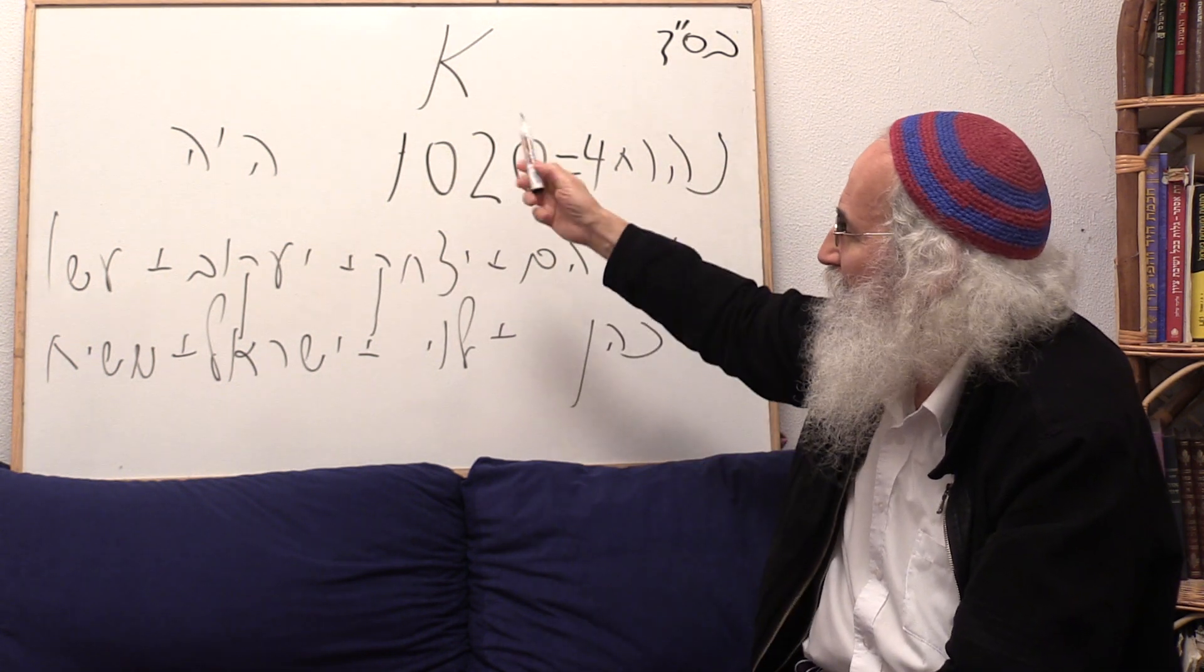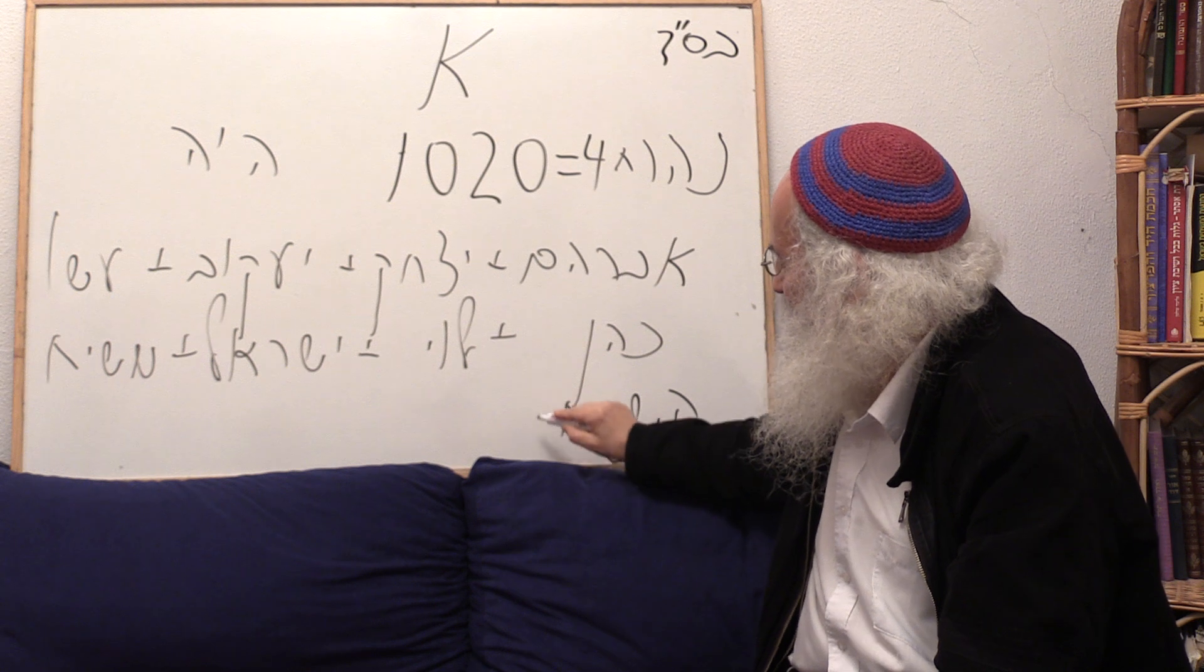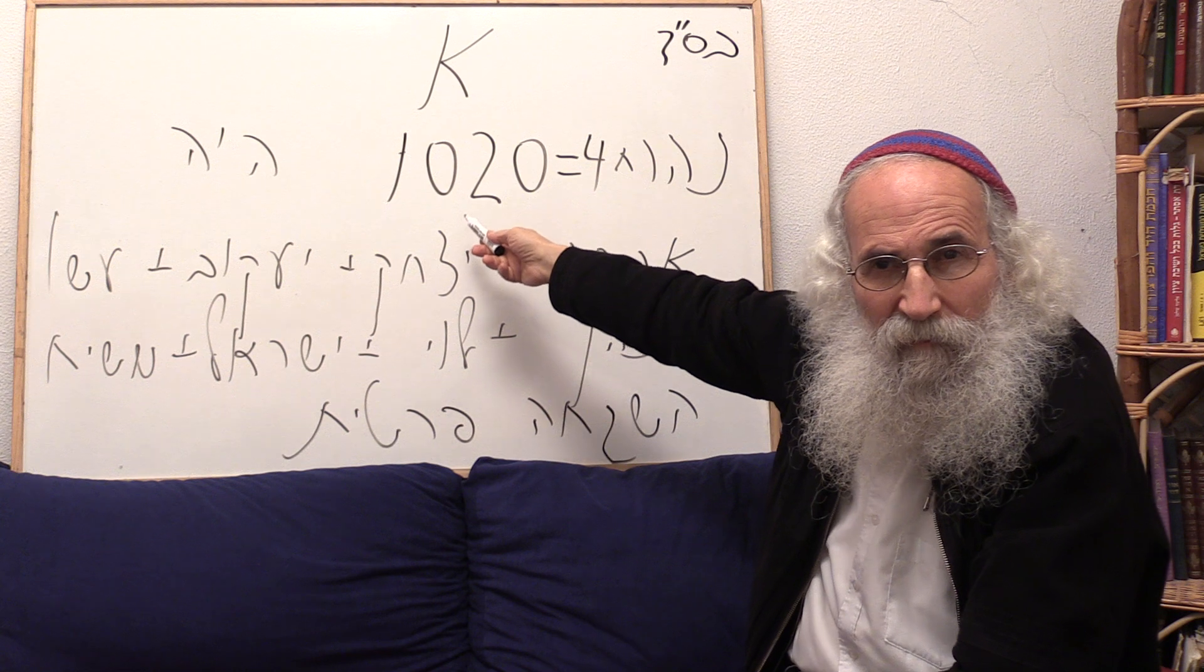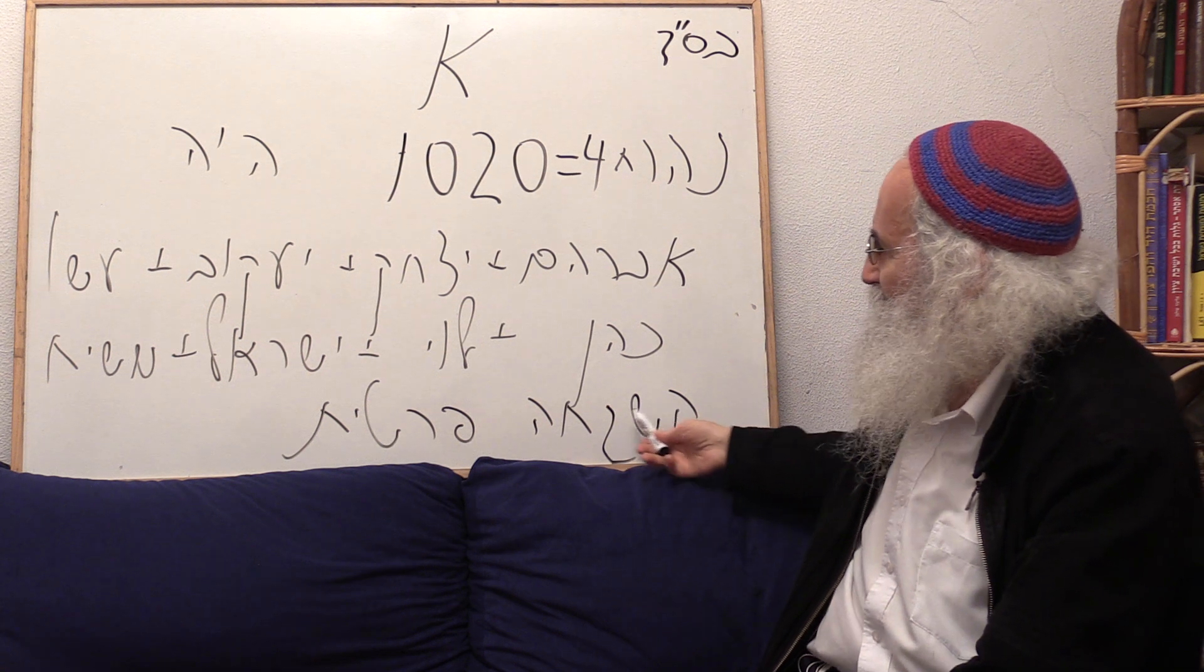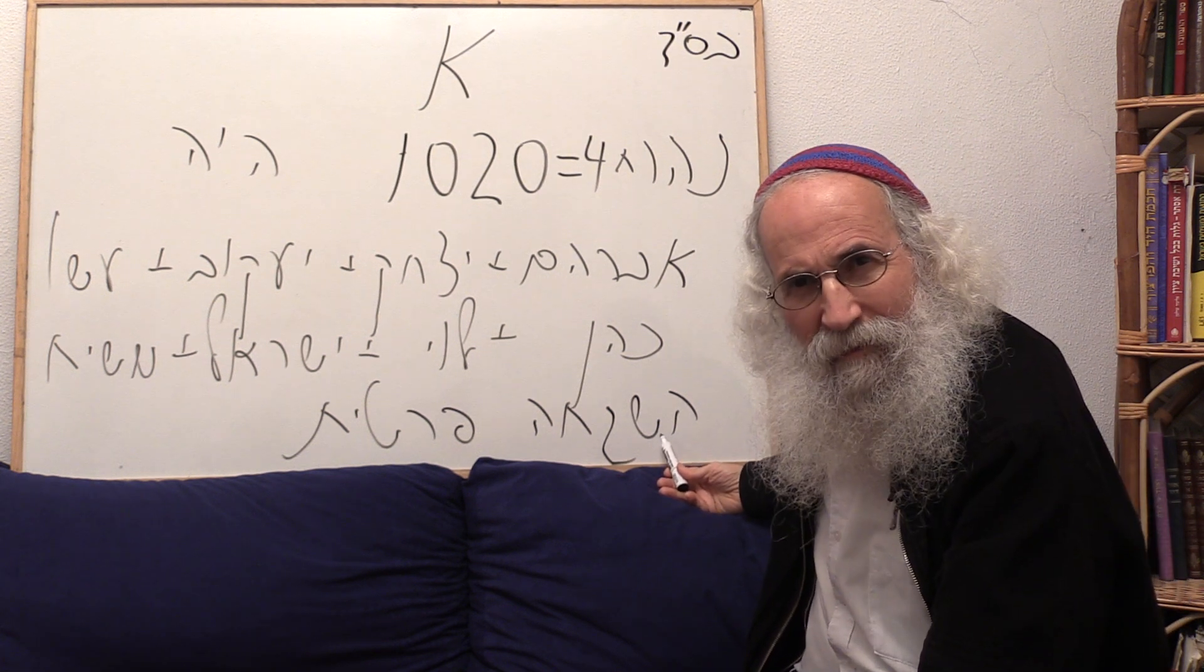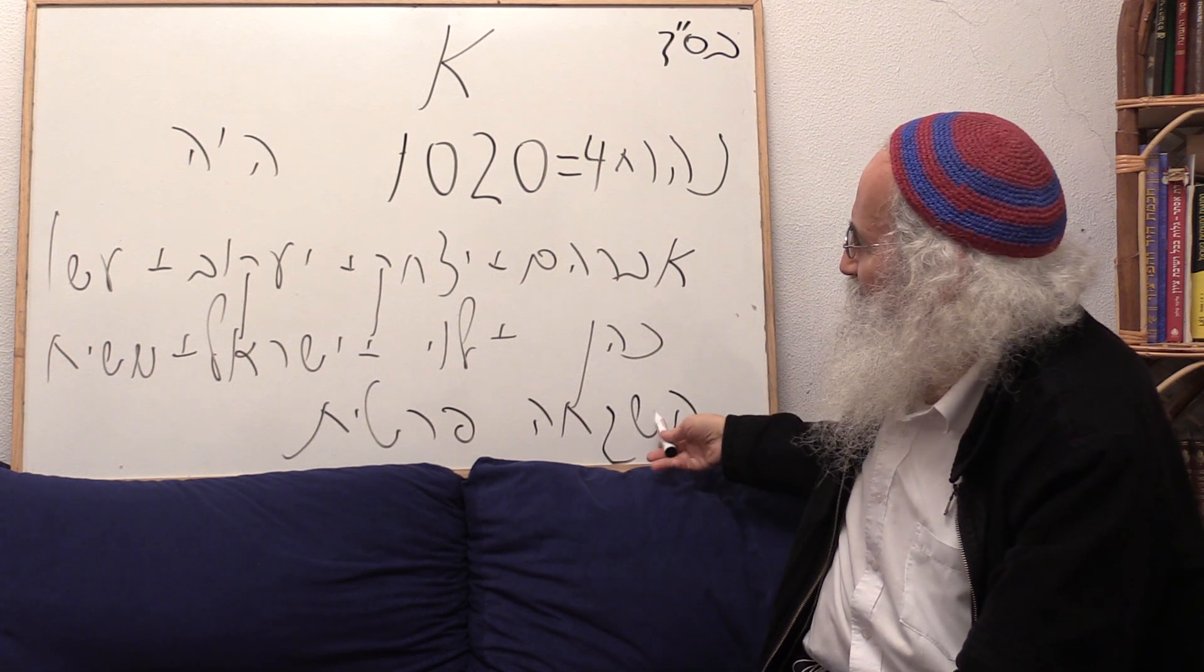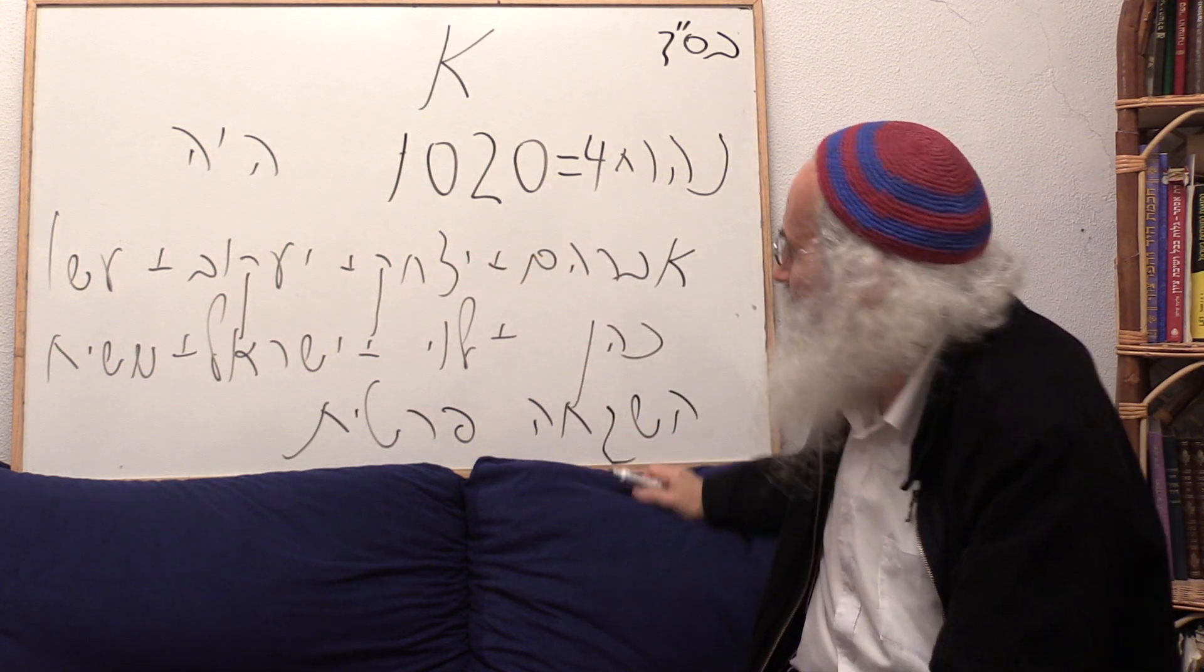So very simply, this name equals these four rivers, something we've been talking about many times. Another thing that equals this number is Ashgachah Pratit. Private Providence. Ashgachah Pratit. And this number equals 10 times 102, what is 10 times Emunah, 10 times Faith. We have here 10 letters, Ashgachah Pratit. It means the average value of each letter of Ashgachah Pratit. The average value of each letter is Faith, Belief, Emunah.